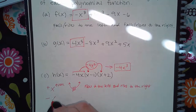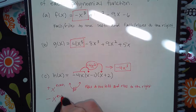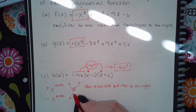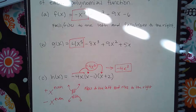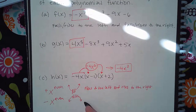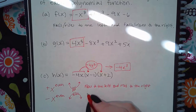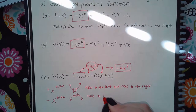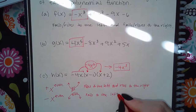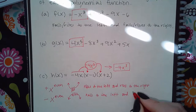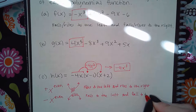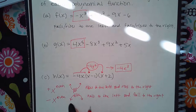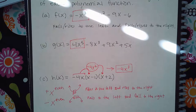Now if it's a negative coefficient but still an even power, it's going to look like a parabola going down. Again, we don't know what's happening in the middle — all we know is what's happening at the ends. The way they say it is: falls to the left and falls to the right, because on the left side it's going down and on the right side it's going down.